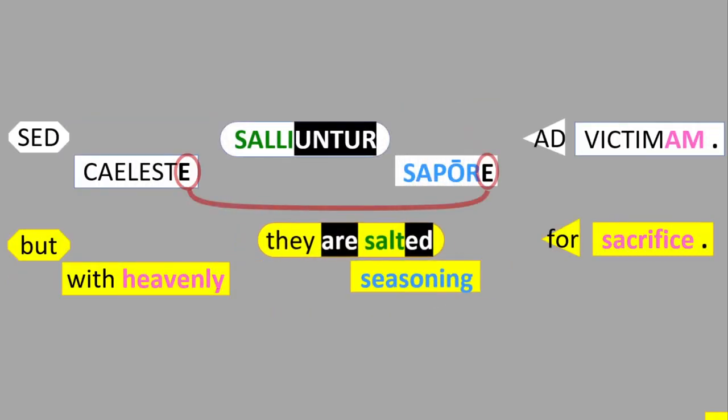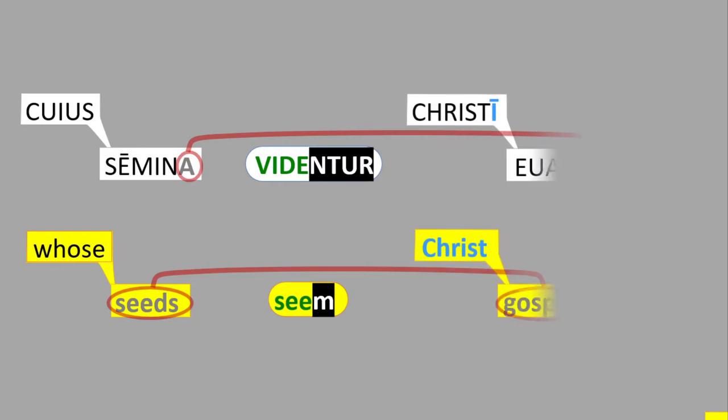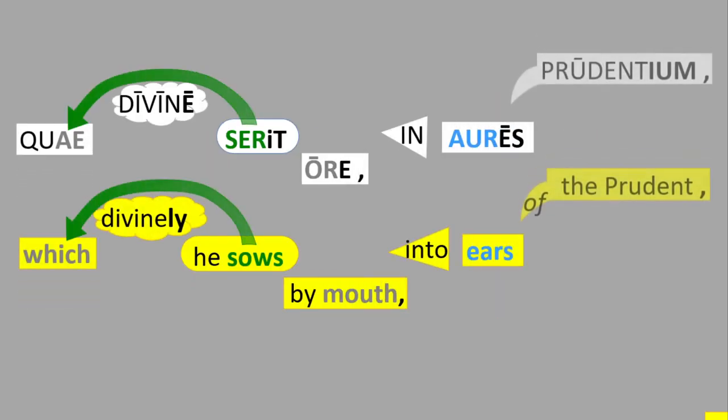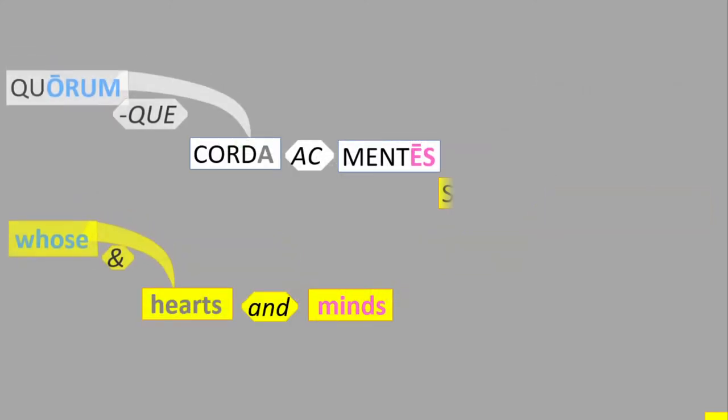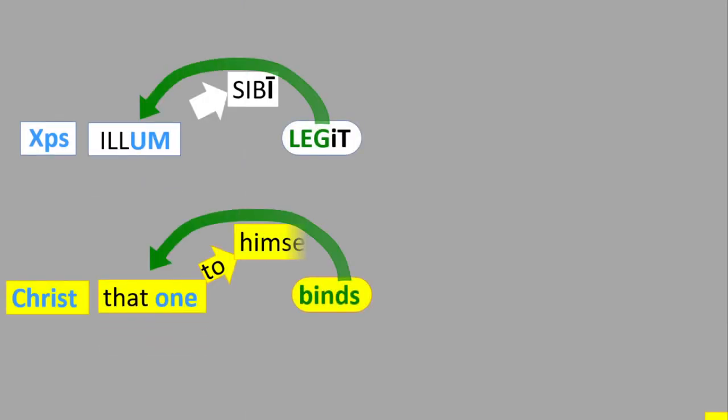de humane putrint carne, sesaequeam vermibus, sed caelestes saliunter sappore ad victimam, veres cultoret insignus agrio angelici cuius sepina videntur cum crista igu angelia, quae divines serit ore in aures prudentium, quoram que corda ac mente sancto harat spiritu